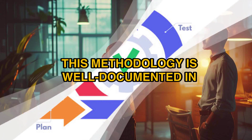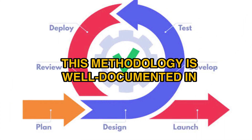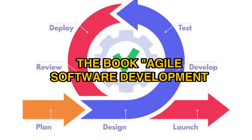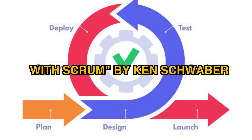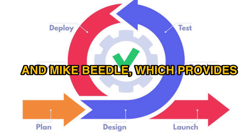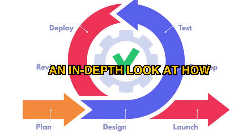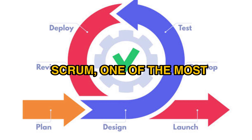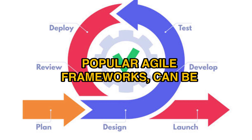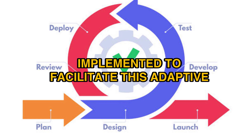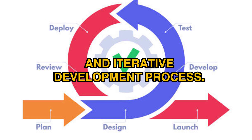This methodology is well documented in the book Agile Software Development with Scrum by Ken Schwaber and Mike Beadle, which provides an in-depth look at how Scrum, one of the most popular Agile frameworks, can be implemented to facilitate this adaptive and iterative development process.